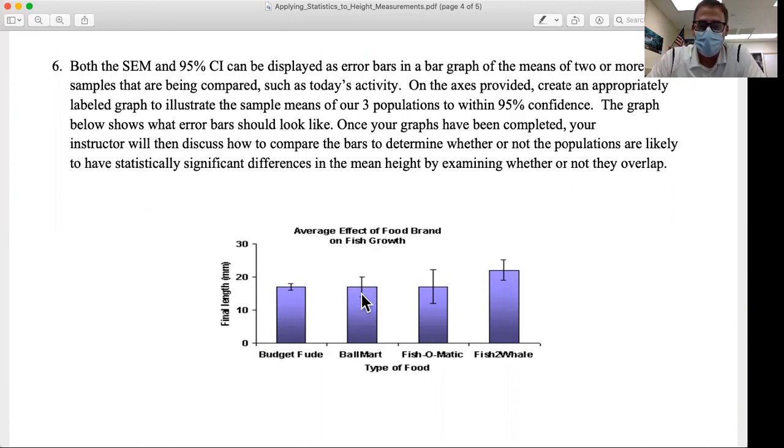When I look here, we were analyzing the effects of different types of fish food on the final length of a particular fish. Budget food had this mean final length, Ballmart food had this mean final length, Fish-o-matic had this one, and Fish-to-Whale had this mean.